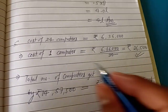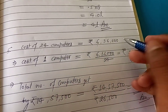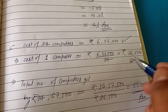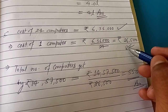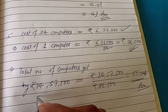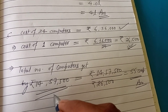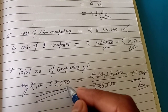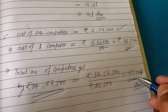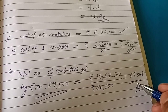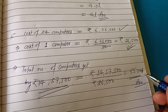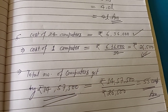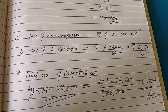55 computers. Yani ki 24 computers ka cost itna tha, to ek computer ka cost find kiye, aur jo bhi per computer ka cost aaya, us se total money ko divide kar diye. So total number of computers aa gaya: 14,57,500 mein total 55 computers milenge. Is tarah se chapter 9 complete hua. In the next video I will explain chapter number 10. Thank you.